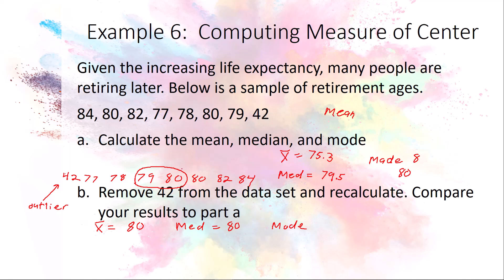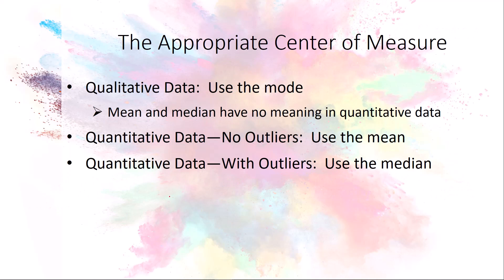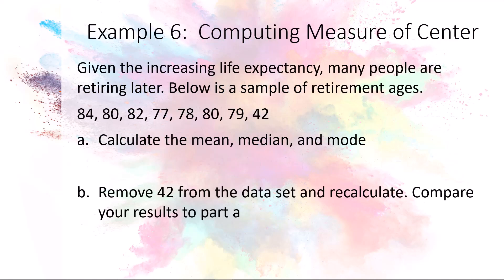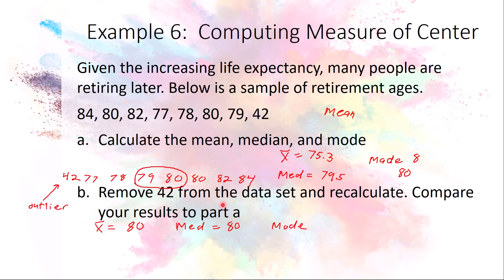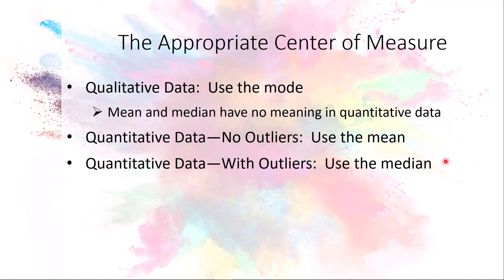When an outlier is present, the mean is directly affected while the median is not. For qualitative data — which is just a bunch of labels — you cannot sort or compute averages, so you can only find the mode. For quantitative data with no outliers, use the mean. For quantitative data with outliers, the median is probably the best measure of center because it accounts for outliers without being dramatically shifted.